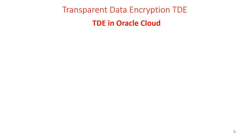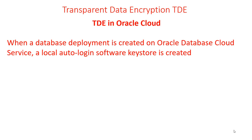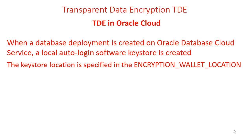TDE in Oracle Cloud: when a database deployment is created on Oracle database cloud service, a local auto-login software key store is created. The key store is local to the compute node — so if it's a RAC instance, each node will have its own key store. The auto-login software key store is automatically opened when accessed. The key store location is specified in the encryption wallet location parameter, which is one of the parameters that defines the database. The Oracle key store stores a history of retired TDE master encryption keys, which enables you to change them and still be able to decrypt data that was encrypted under an earlier TDE master encryption key — so you can use different keys to work with older data.